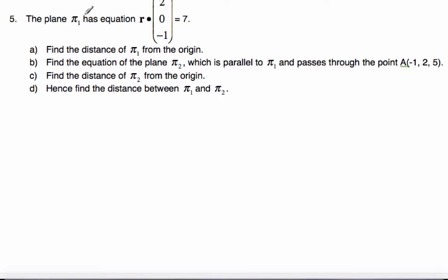We have this plane, pi 1, has this particular equation, and this is in scalar product form. We want to find the distance of the plane from the origin. Well, I know that if this vector here, which is normal, if this is a unit vector, then the d value is the distance from the origin.